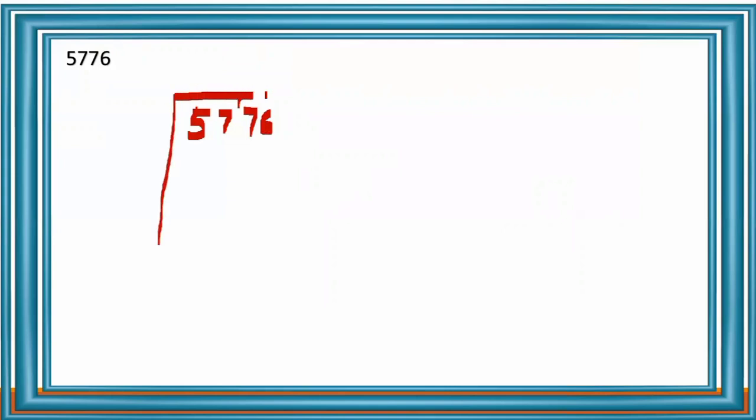Next number: 5,776. We continue the same way. Group the digits into pairs and draw the line. The first pair is 57. Which perfect square is less than or equal to 57? Seven sevens are 49, eight eights are 64 — so seven sevens are 49.